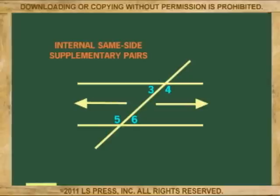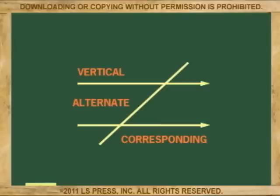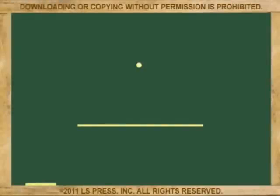Pairs 1 and 7, and 2 and 8 are external same-side supplementary angles. Pairs 3 and 5, and 4 and 6 are internal same-side supplementary angles. All supplementary angles add up to 180 degrees. To summarize: if two parallel lines are cut by a transversal, then all vertical, alternate, and corresponding angles are equal, and same-side angles are supplementary.